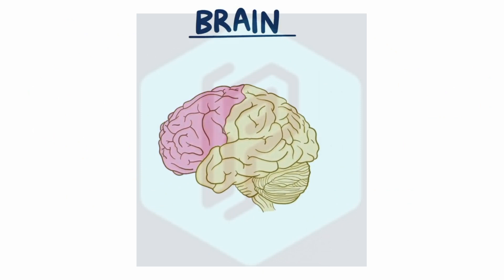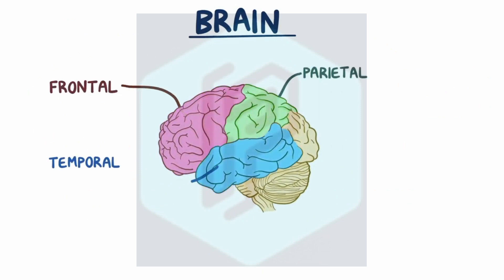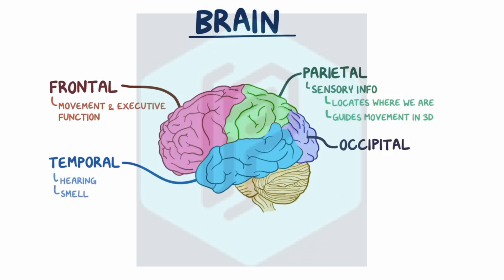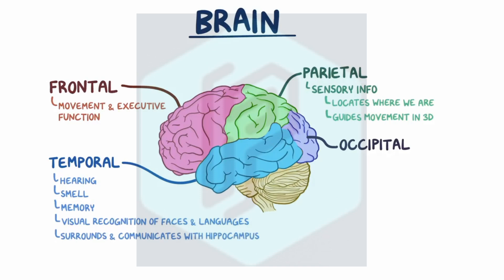The cerebral cortex is divided into the frontal lobe, parietal lobe, temporal lobe, and occipital lobe. The frontal lobe controls movement and executive function — our ability to make decisions. The parietal lobe processes sensory information, letting us locate where we are physically and guiding movements in three-dimensional space. The temporal lobe plays a role in hearing, smell, memory, and visual recognition of faces and languages, and communicates with the hippocampus to help send information from short-term to long-term memory. Finally, the occipital lobe is primarily responsible for vision.